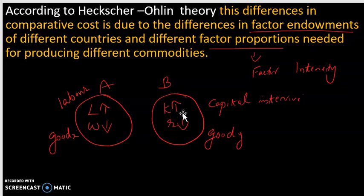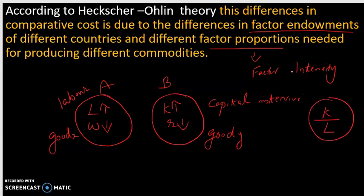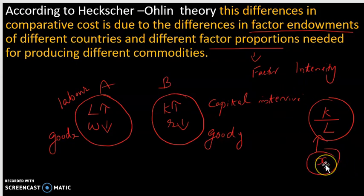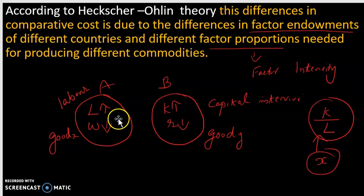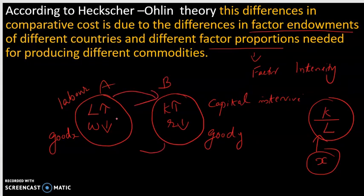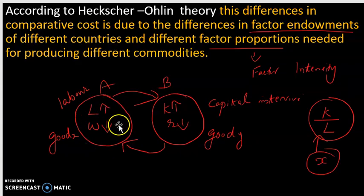In labor-abundant countries the labor is relatively cheap. We use the K by L ratio in commodity production to measure factor intensity. If country A is a labor-abundant country, then country A will export the labor-intensive commodity — good X — to country B, and will import the capital-intensive commodity from country B. Country A will produce the labor-intensive commodity because it can do so at a cheaper rate.